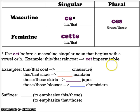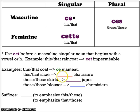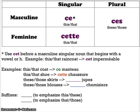Let's try some of these out. I want to say this or that coat — that's manteau. Coat is masculine singular, so I'm going to use my masculine singular form and say ce manteau, which can mean this coat or that coat. I want to say this or that shoe — chaussure is feminine singular. So I will use cette, and I have cette chaussure.